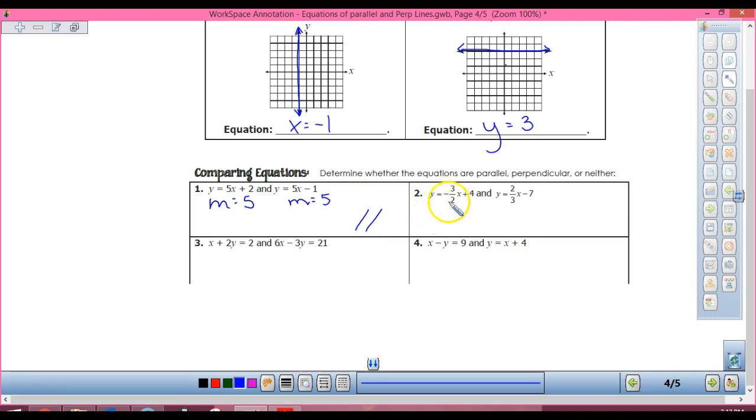Alright, so now we're getting to the part where we can compare some equations. In number one, I'm comparing my equations. Right here, my slope is what? Five. So my slope is five. What's my slope of this line? Five. So my lines are parallel. That's it.